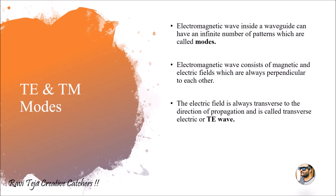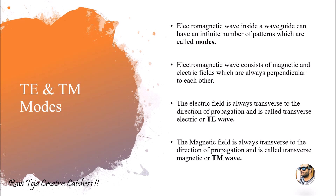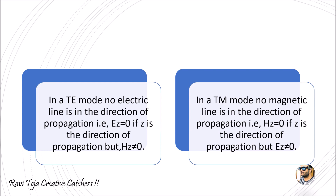A TM wave, or TM mode, is a transverse magnetic mode or transverse magnetic wave, where the magnetic field will be always transverse to the direction of propagation. In a transverse magnetic mode, the magnetic field tries to move away from the waveguide or away from the direction of propagation. As the electric field is perpendicular to this magnetic field, the electric field always moves along the direction of propagation in TM mode. Let us consider the direction of propagation is along the z axis.